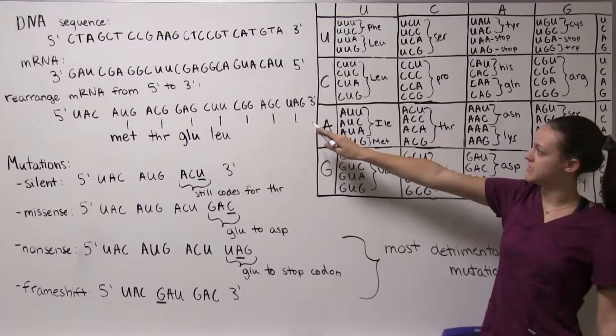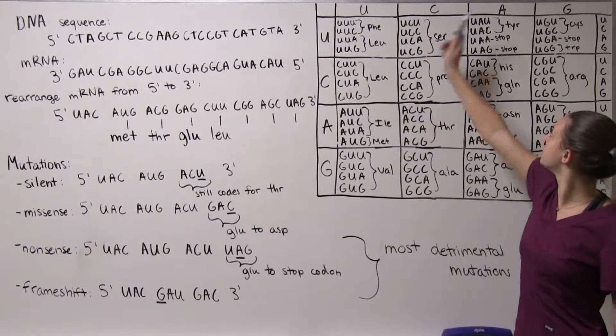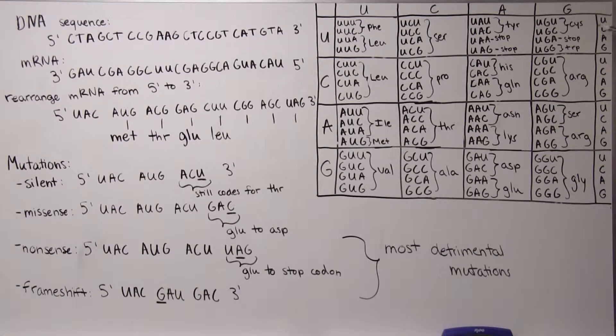Next we have CGG so we start again in this row for C then we go to this row for our second letter G and then over here is our third letter we have G here, CGG, and it's going to be arginine.